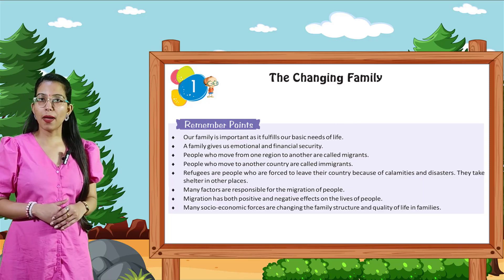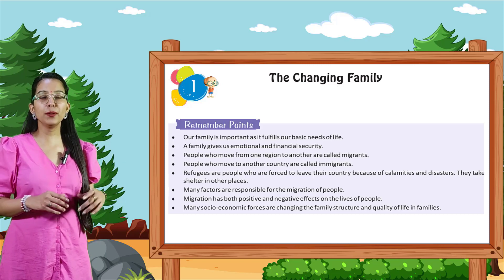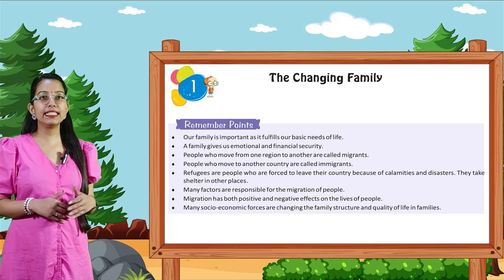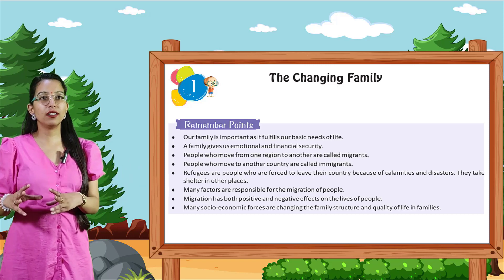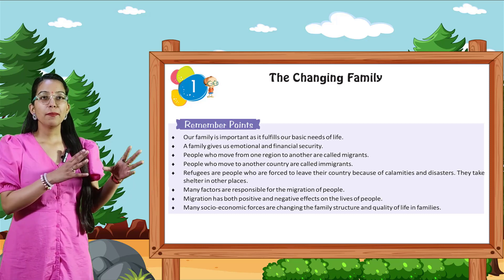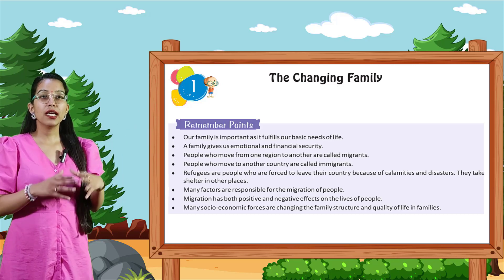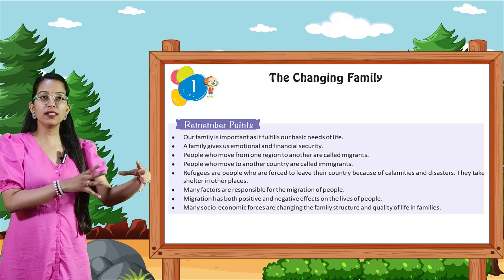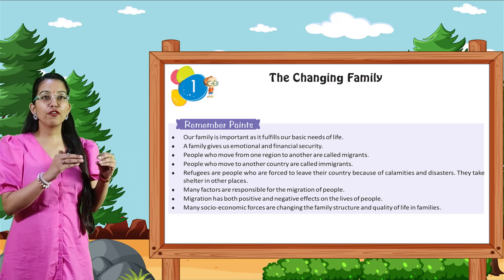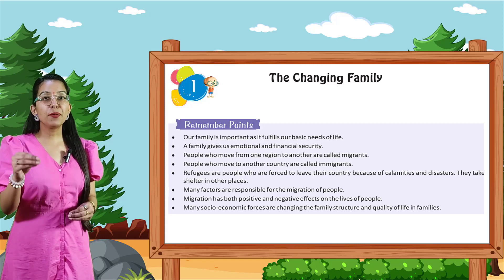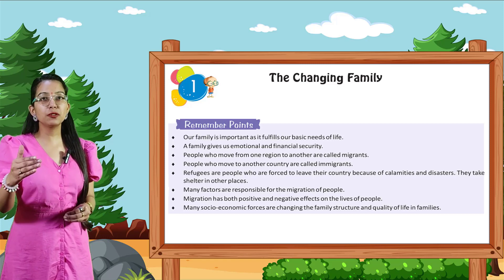Now here are the remember points. We conclude our chapter with these remember points. Our family is important as it fulfills our basic needs of life. A family gives us emotional and financial security. People who move from one region to another are called migrants. People who move to another country are called immigrants.